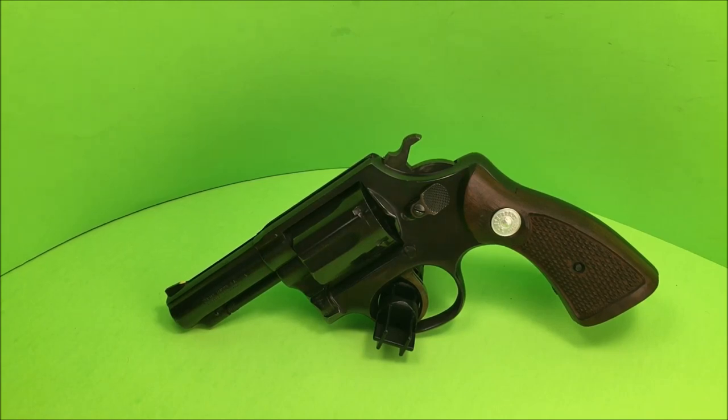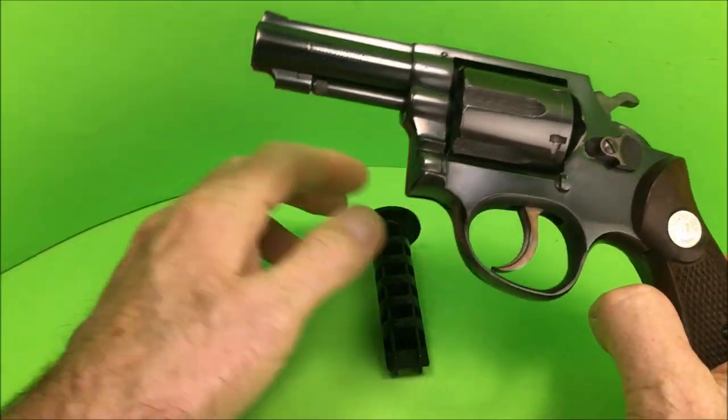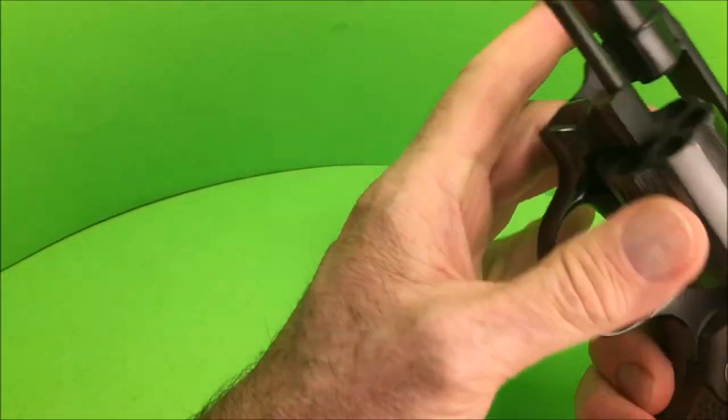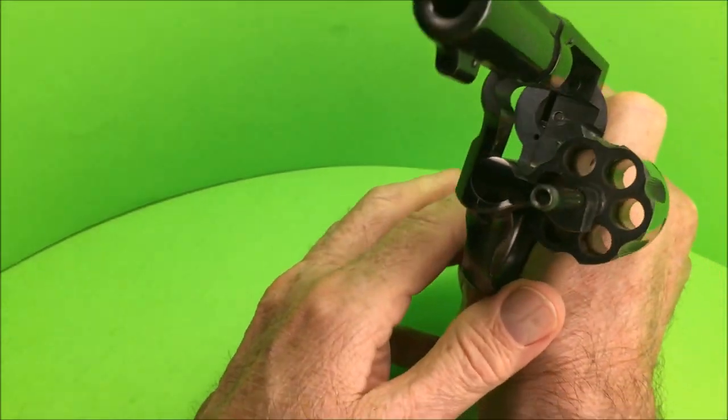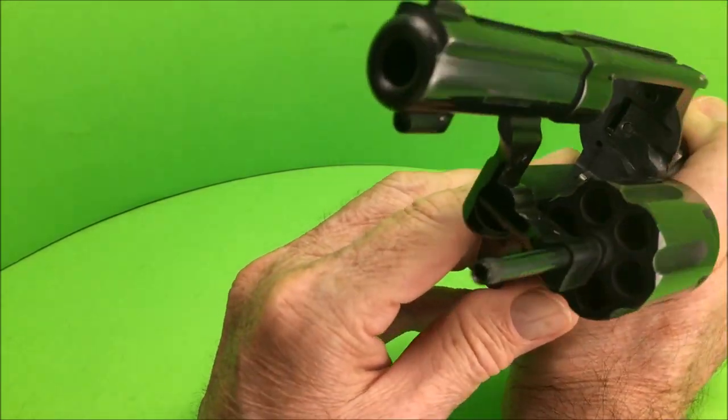Hello gun enthusiasts and aficionados. Today we are looking at a Taurus Model 82. This is a six-shot revolver very similar to the Smith & Wesson Model 10.